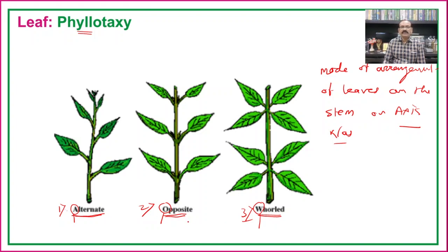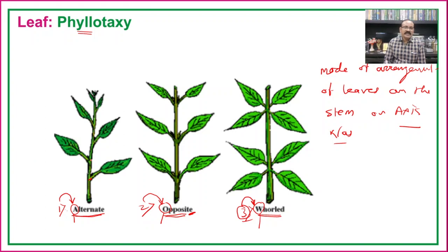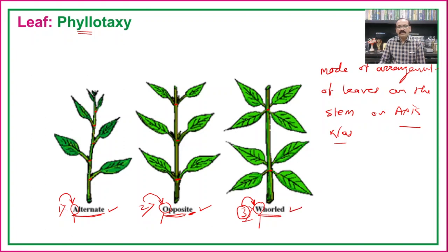If there is development of one leaf from each node, it is known as alternate. If there is development of two leaves from each node, it is opposite. If there is development of three or more leaves from each node, it is known as whorled. These can be seen in diagrams showing one, two, and four leaves per node.